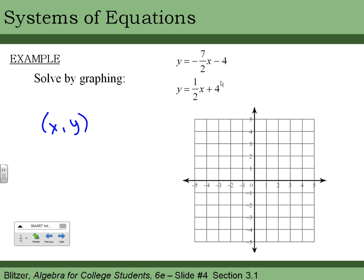Let's graph this first one, which I'm going to graph in blue. To graph y equals negative seven halves x minus four, I'd go down four for my y-intercept. My slope is negative seven over two.